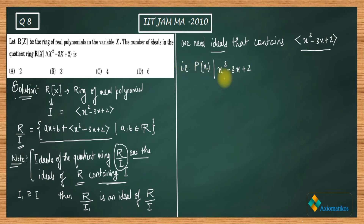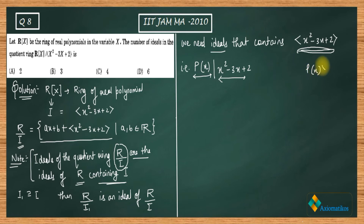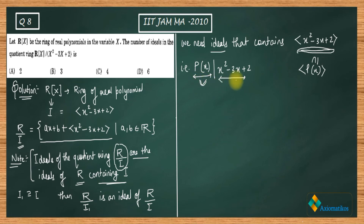To find a super-ideal — that is, an ideal that contains our given ideal — we need to find a polynomial that divides x² - 3x + 2. The ideal generated by that polynomial will be a super-ideal containing ⟨x² - 3x + 2⟩. You can verify this yourself from the definition: if p(x) divides x² - 3x + 2, then ⟨x² - 3x + 2⟩ ⊆ ⟨p(x)⟩.